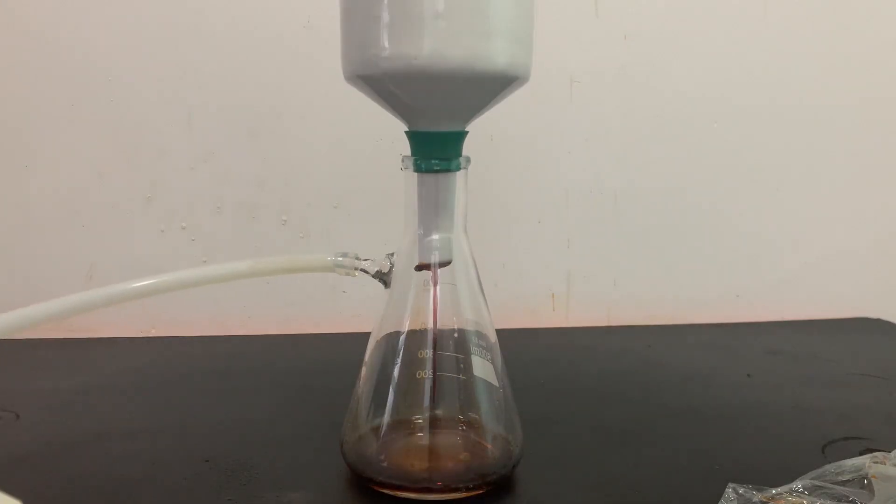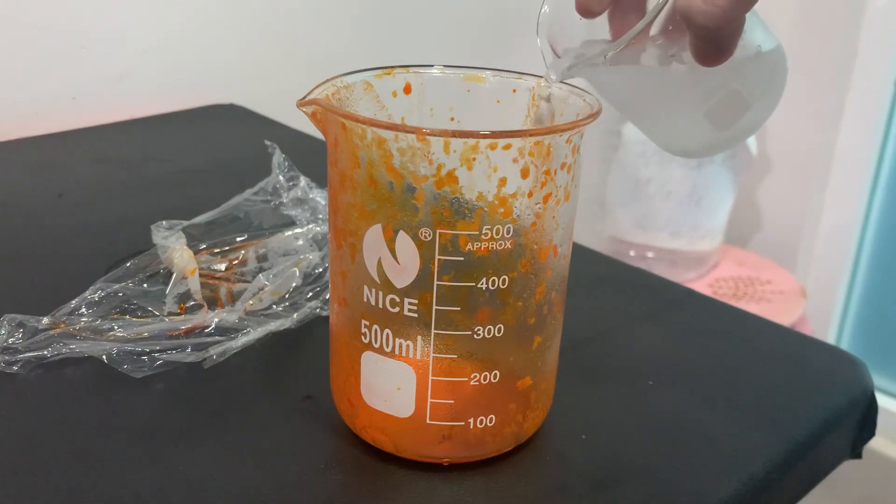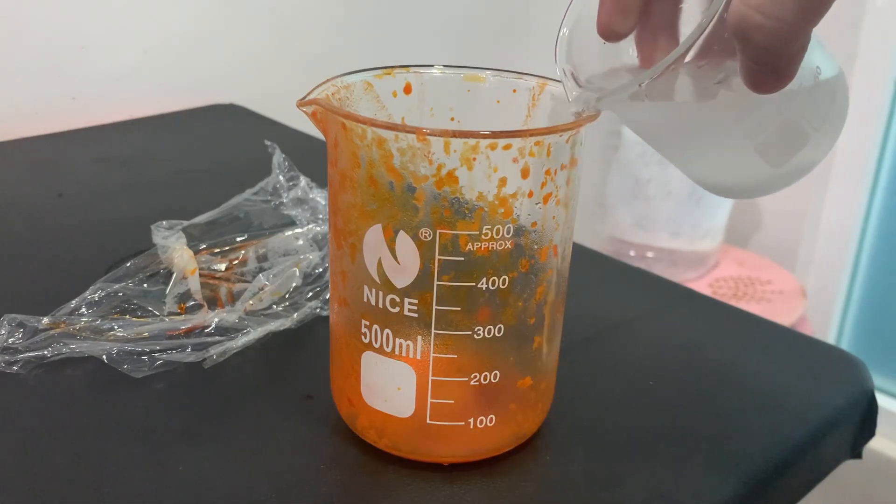After cooling, a vacuum filtration is done to separate the methyl orange. I washed the beaker with cold brine to get out as much of the methyl orange.